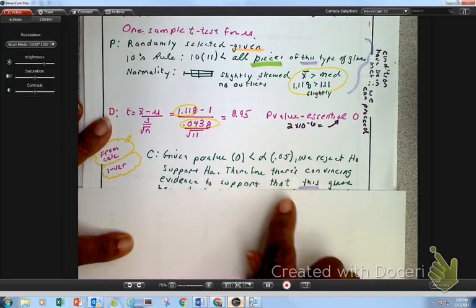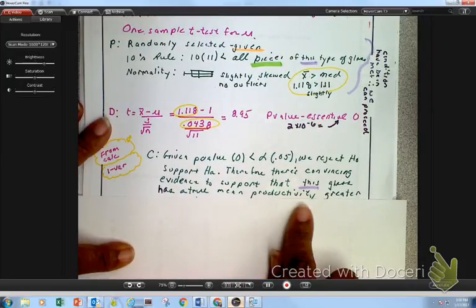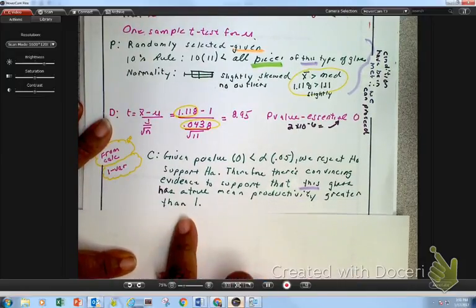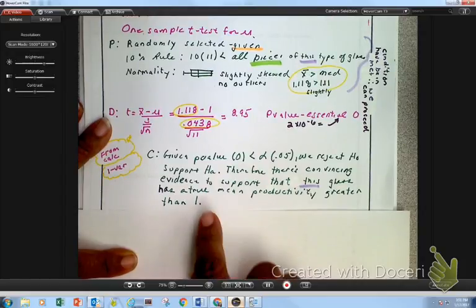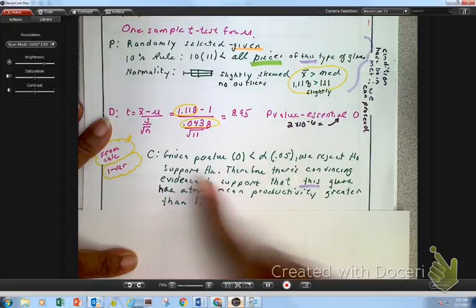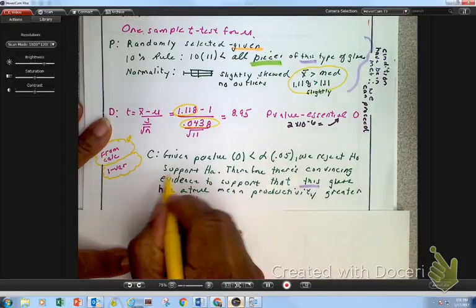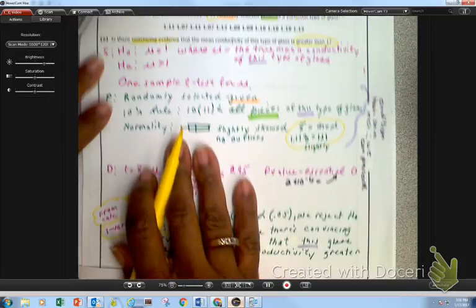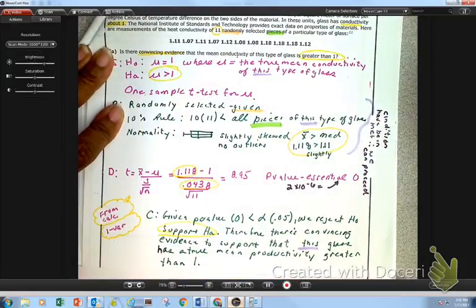We're going to reject the null hypothesis and support the alternative hypothesis. Therefore, there's convincing evidence to support that this glass has a true mean conductivity greater than 1. Because, remember, greater than, I said I was going to support the HA. And what does the HA say? Yep, the HA says it is greater than.